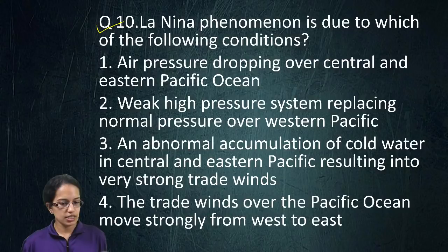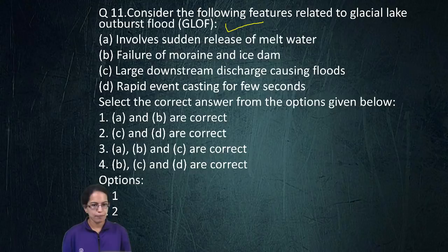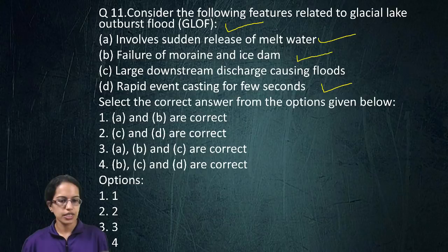GLOF — that is, Glacier Lake Outburst Flood — involves a rapid, sudden release of meltwater because a huge mass of glacier is melting, causing a lot of water to flow down. There is also failure of ice dams and moraines, and a large amount of discharge which can lead to floods. All four of those are the correct options for this question.